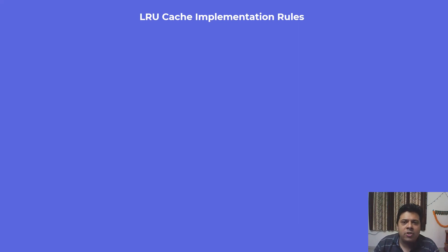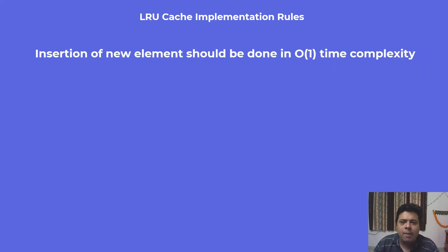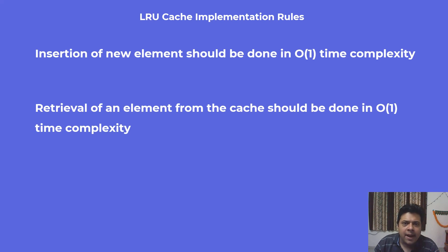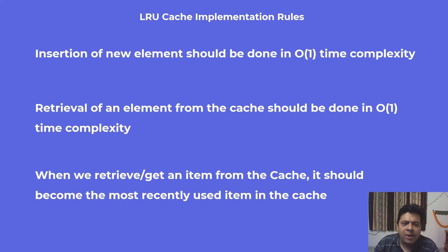Let's look at the implementation. Before we get into the specifics, there are some implementation rules associated with LRU cache. The first rule is insertion of a new element into our cache should be done in constant time complexity, because if we are implementing a cache we want fast insertions. The second rule is retrieval or removal of an element from the cache should also be done in O(1) time complexity. The third rule is when we retrieve or get an item from the cache, it should become the most recently used item, and this operation should also be in constant time. These are the points that a panelist will be expecting you to touch upon in an interview setting.